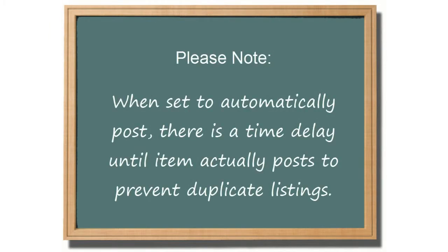It's important to note that when an item is set to automatically list, there will be a delay until the time it actually posts. This delay is to prevent a situation where a user doesn't realize that the item is set to automatically post and initiates the listing manually, resulting in duplicate listings. With the delay, the system has time to determine if the item is currently posted and will not generate an automatic listing.